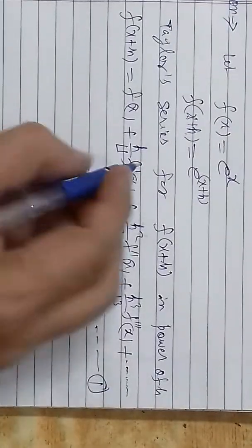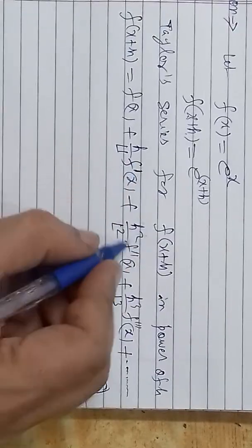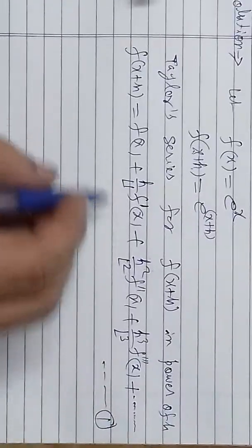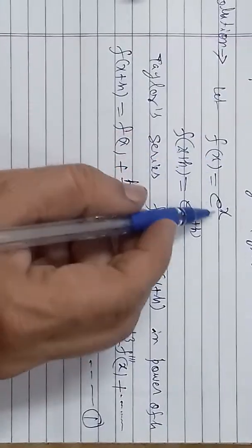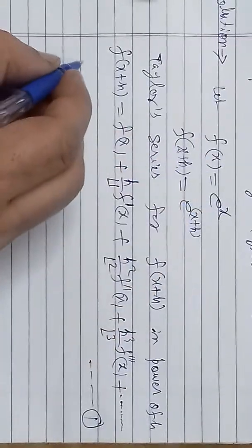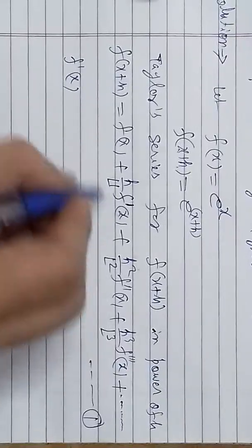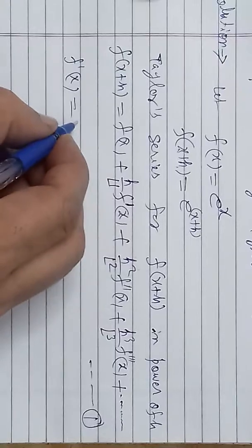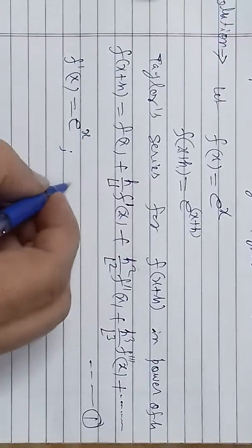Is Taylor series mein inn sab derivatives ki values put karni hain — f ka first derivative, second derivative, third derivative, etc. Chunki function f(x) = e^x hai, to iska first derivative f'(x) ko x ke respect mein differentiate karna hoga. Hum log jaante hain ki e^x ka differentiation e^x hi hota hai, koi change nahi aata.